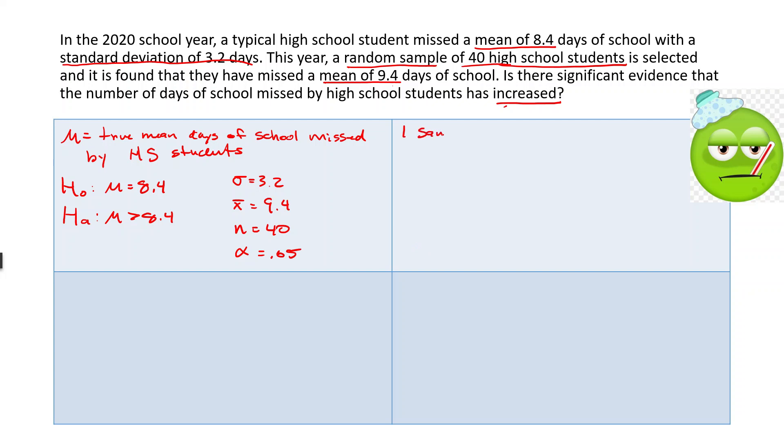We are doing a one-sample z-test for a mean. We have to check three conditions for that. First thing, do we have a random sample? It says it right there, random sample, so check. Number two, our sample size N is 40. 40 is greater than 30, so the central limit theorem kicks in and tells us that we have a normal sampling distribution. So we've got that as normal. And number three, independence. So 10 times our sample size gives us 400, and that is less than all high school students. So check, we're good to go there.